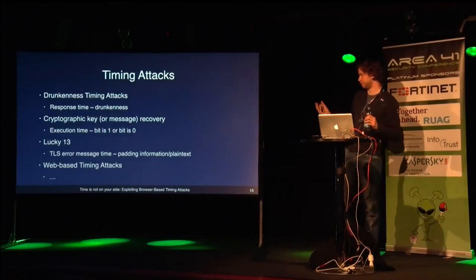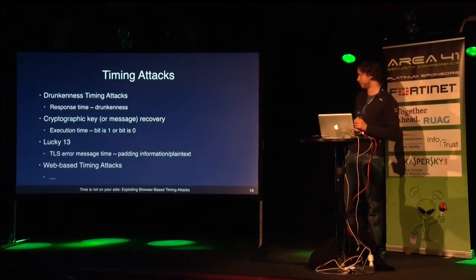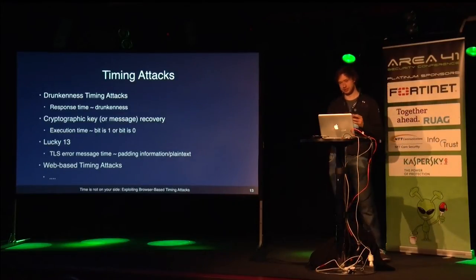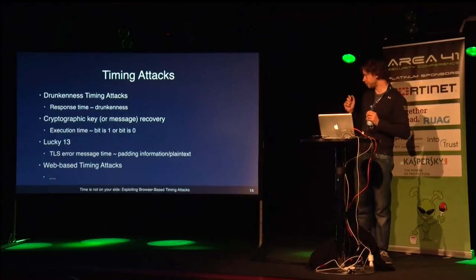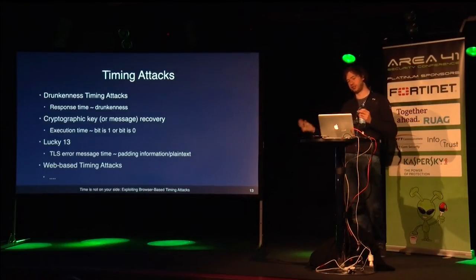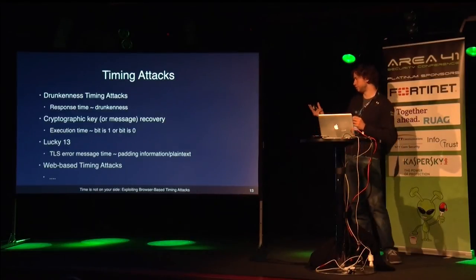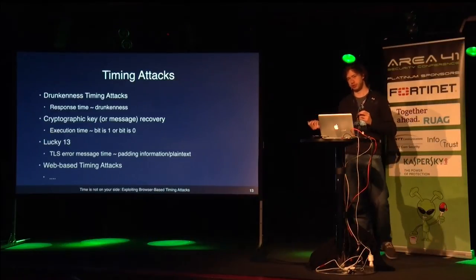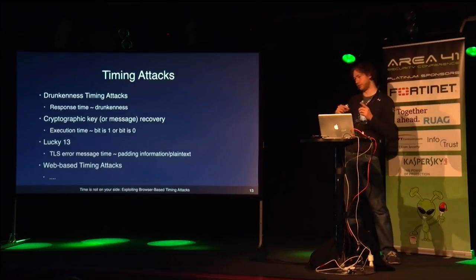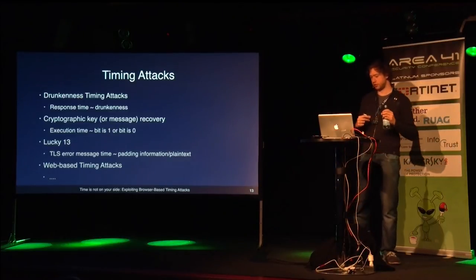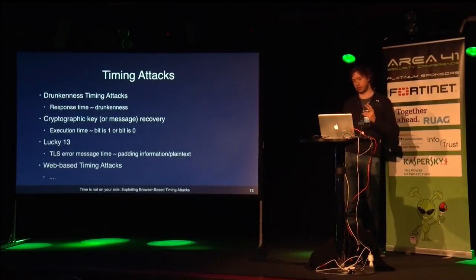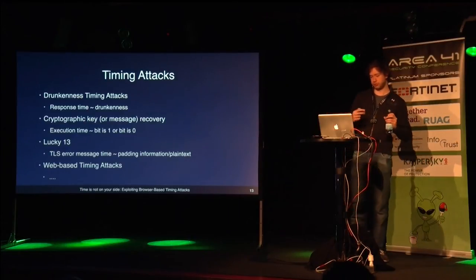The second timing measurement was significantly higher than the first. So that's basically how timing attacks work. With the drunkenness timing attack, the response time of the user or victim relates to the person's drunkenness. The same goes for recovering a cryptographic key — you measure the time it takes to execute something, and that time is related to whether a certain bit of the key or message is one or zero. The same thing goes for the Lucky 13 attack, where you measure the time it takes to receive a TLS error, giving you information about whether the padding of the encrypted data was correct.